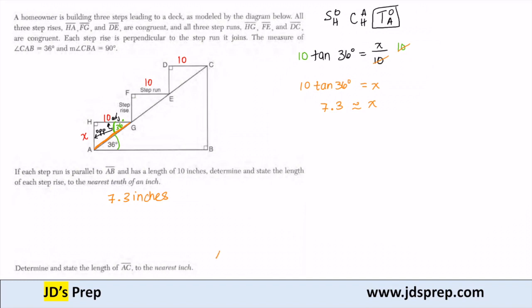And there's three in total. I have AG, I have GE, and I have EC. But they're all equivalent, so if I can find one, then I can just multiply by 3, and that'll give me my whole length AC.